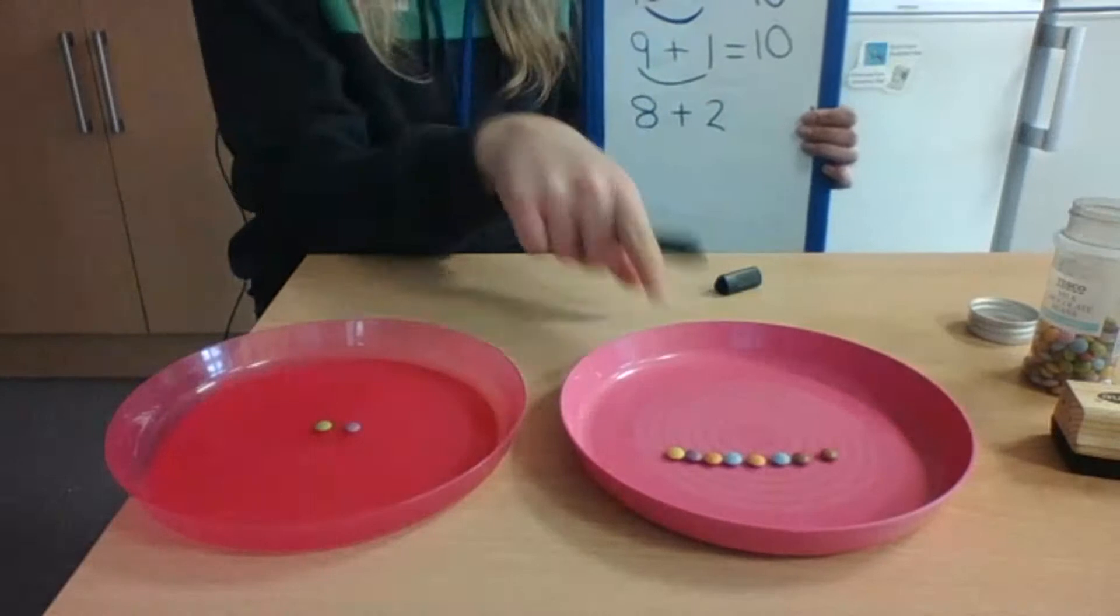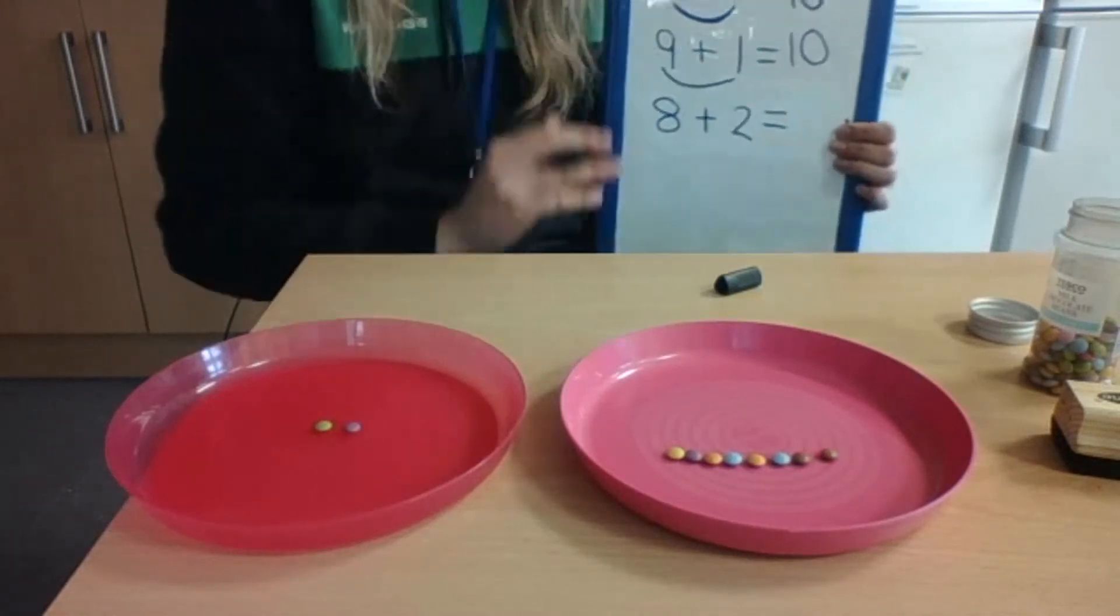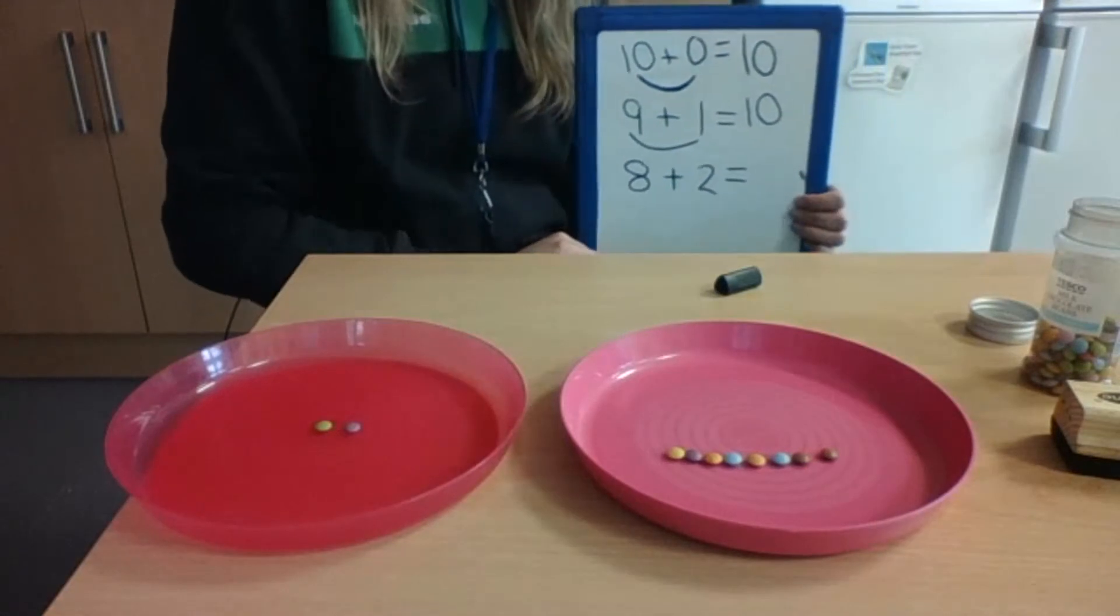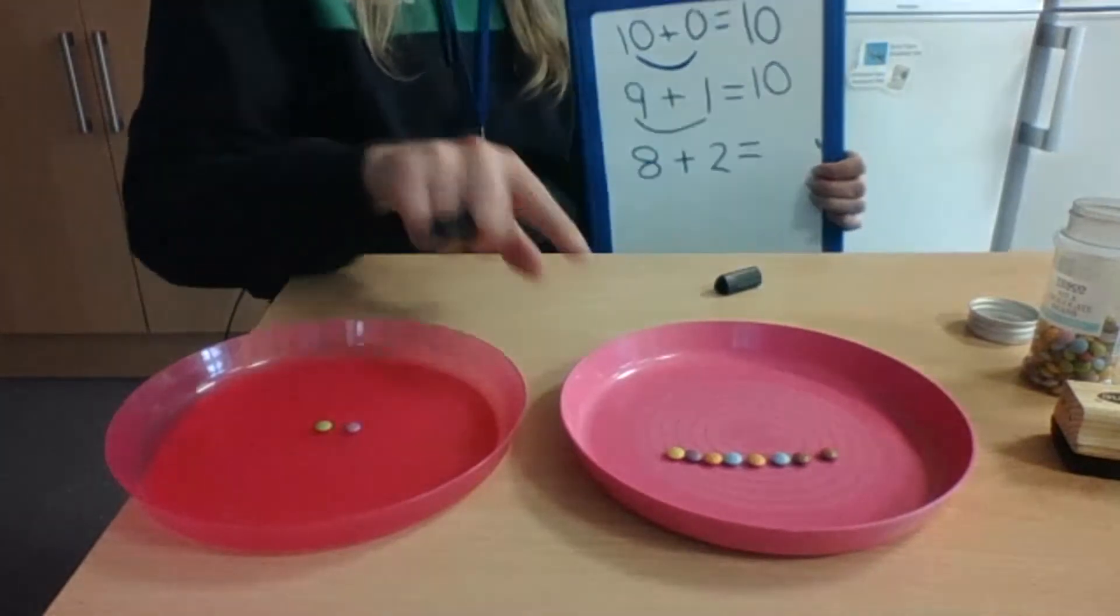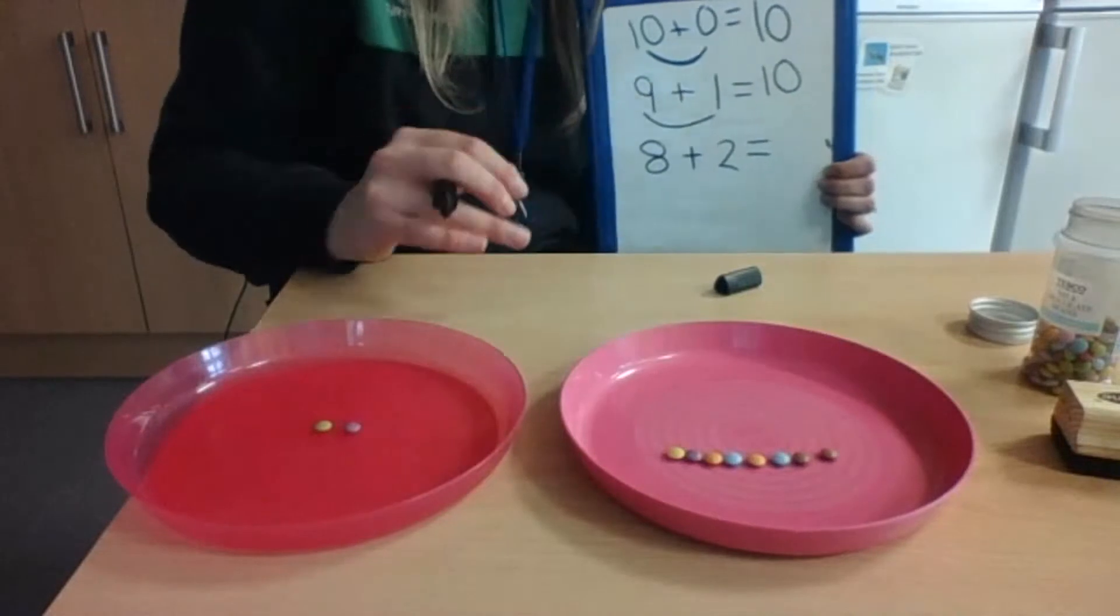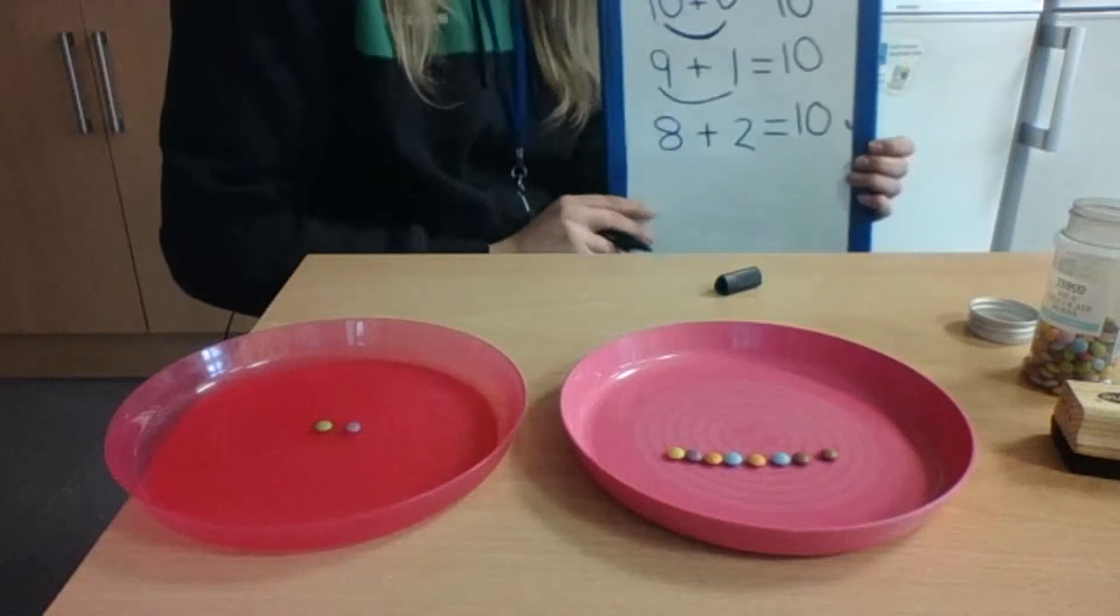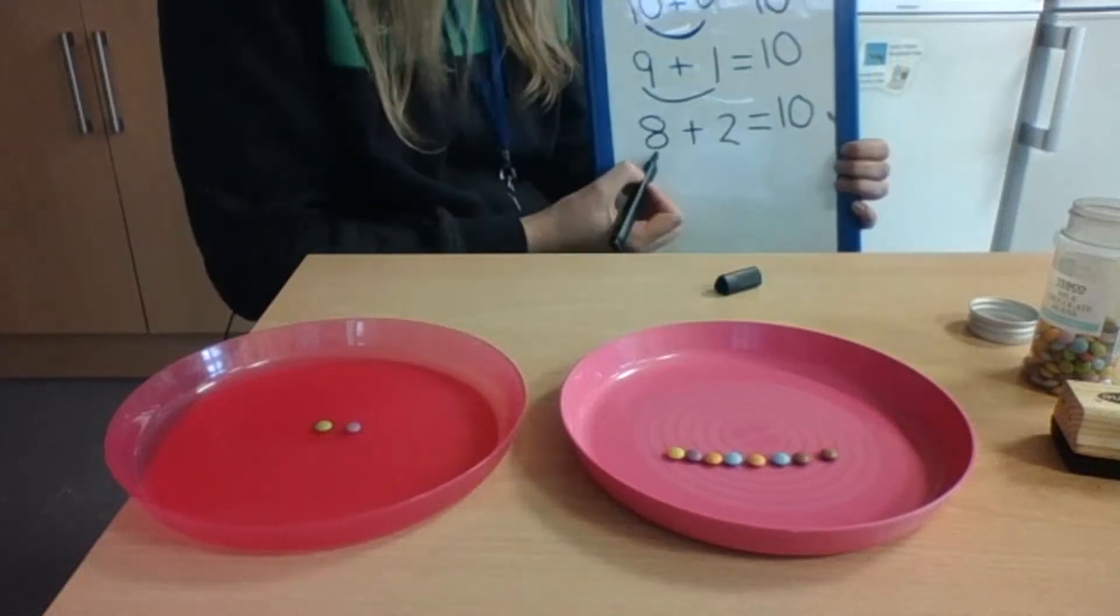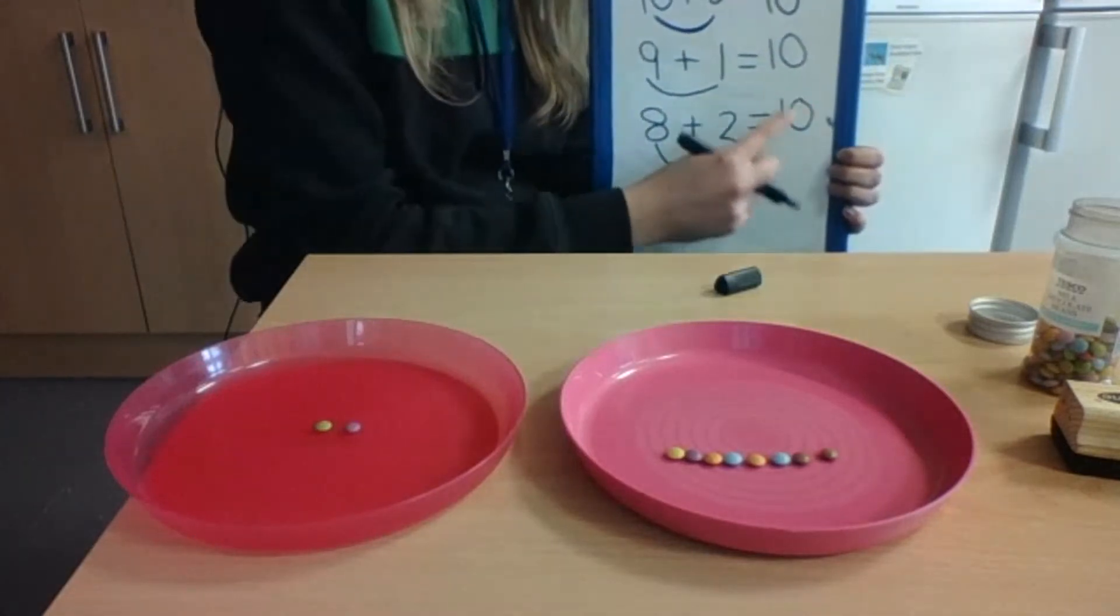So that means that 8 add, how many were here? 2. 8 add 2 equals, without needing to count, how many must there be? If you said 10, you're right, because we had 10 all together to start with and we've just moved some from this plate to this plate. But if we add them all together again, we have still got 10 all together. So this is another one of our number bonds. 8 add 2 equals 10. So 8 and 2 are the two parts that make number 10.